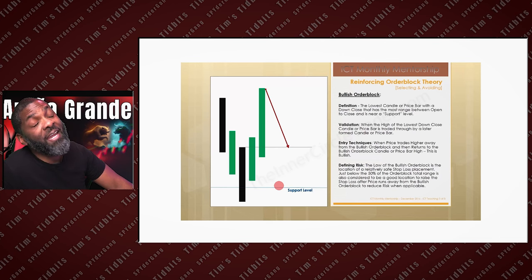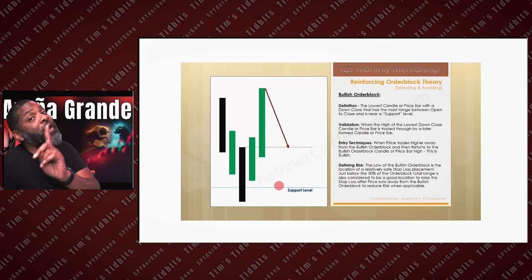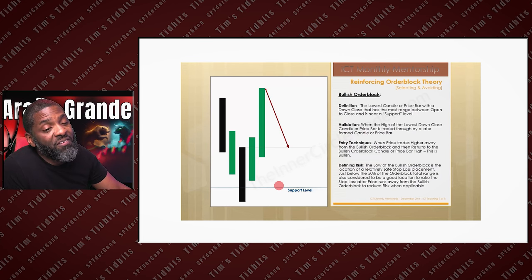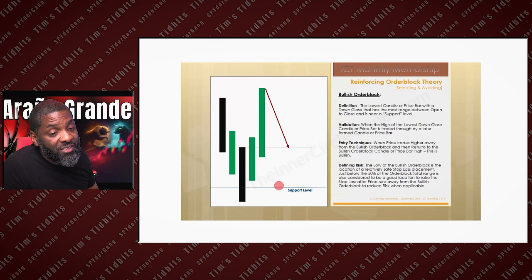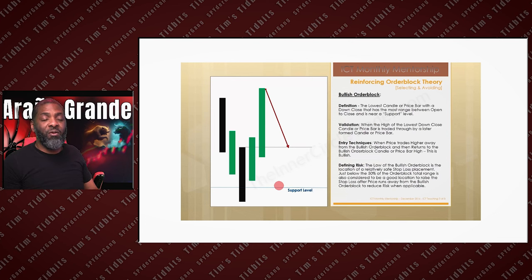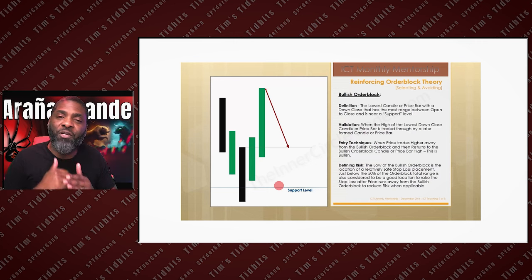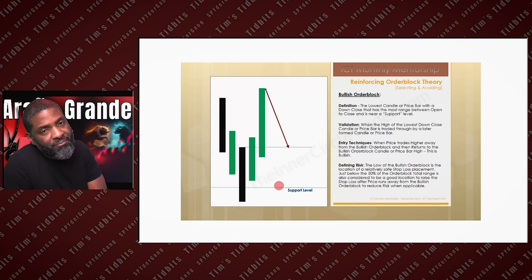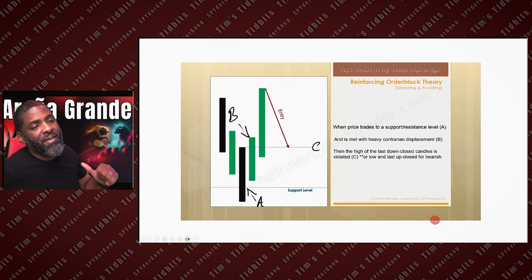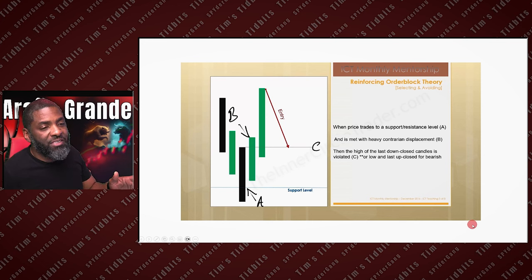For those who want to trade — though we're not trading yet — the low of the bullish order block is the location of a relatively safe stop-loss placement, just below 50% of the order block's total range, called mean threshold. It's also considered a good location to raise your stop-loss as price runs away from the bullish order block to reduce risk. Once you're in the position and it goes in your favor, you can move it up to just below 50% of the total range.